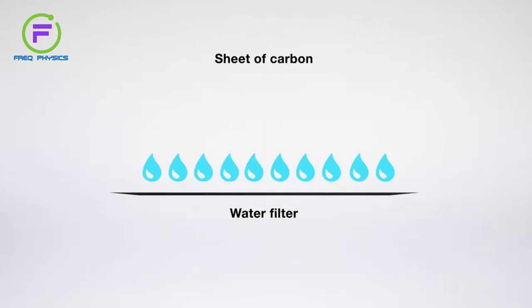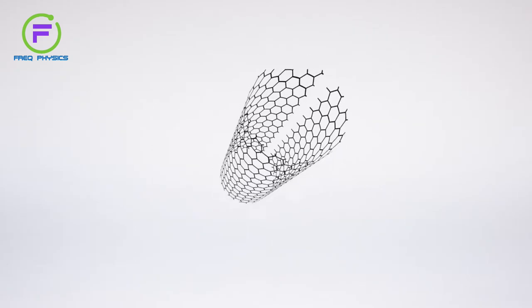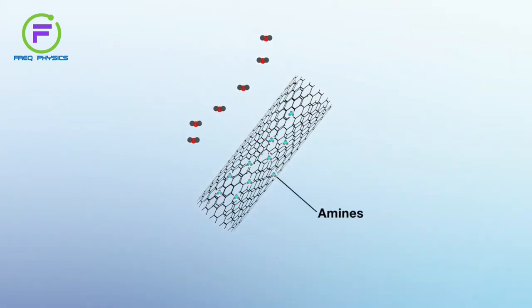Additionally, these carbon sheets can be rolled into nanotubes and decorated with nitrogen-based molecules called amines to remove carbon dioxide from the surrounding environment, refreshing the astronauts' air supply.